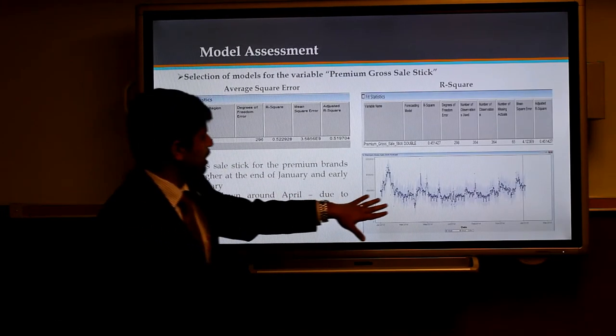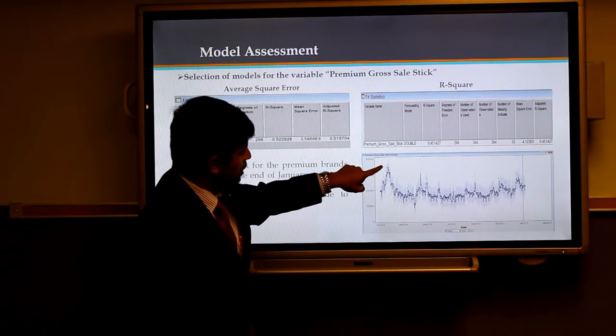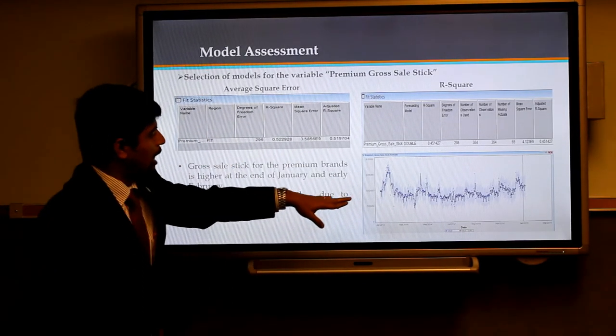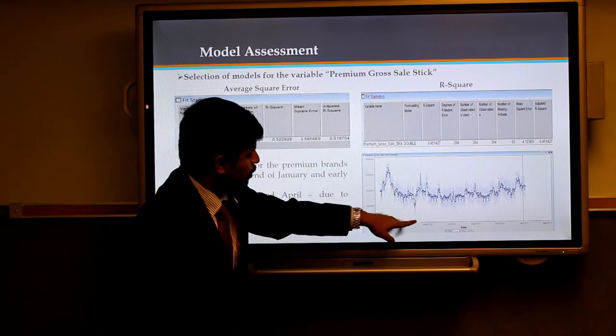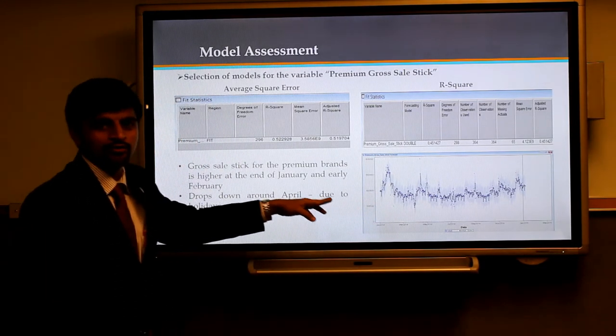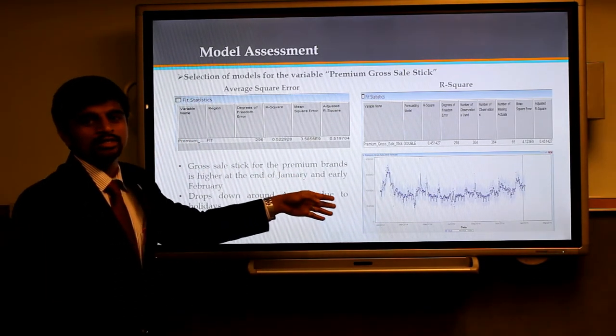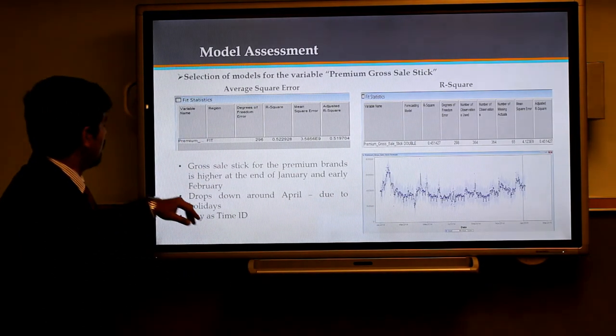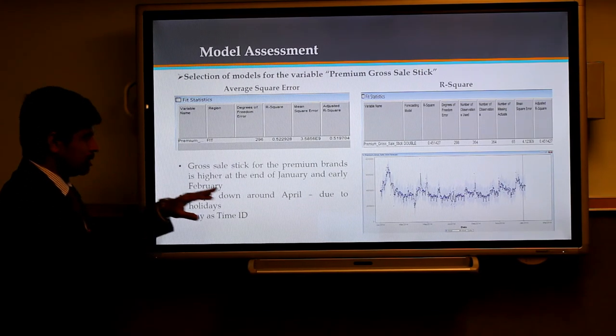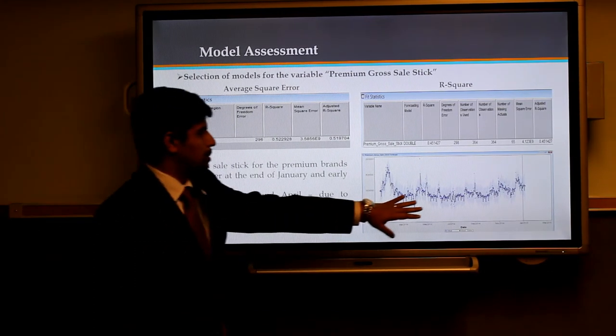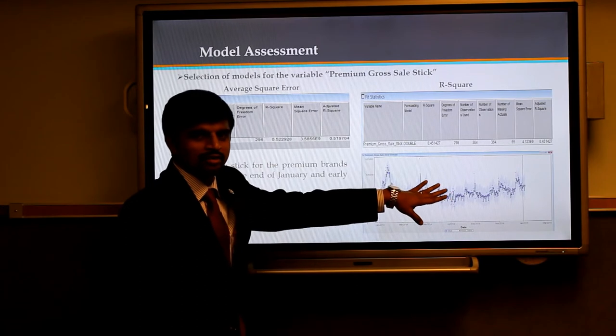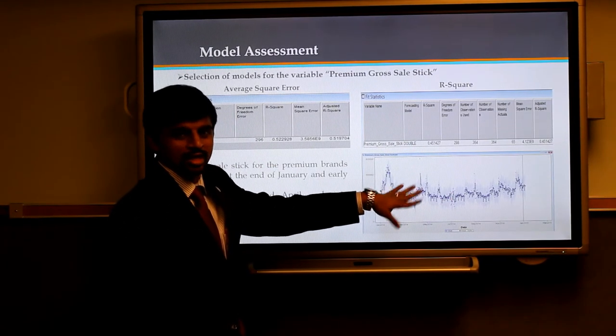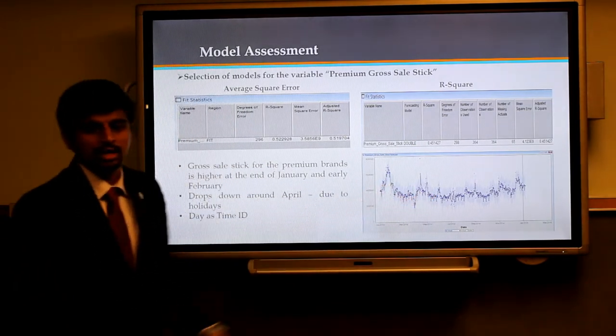As you can see from the graph here, there is a peak right close to the end of January or starting of February, and there is a downfall close to April. That is because of holidays and because of which the sales representative would not visit the outlet. We have lots of ups and downs in this graph, which is because the time ID is selected as day, and so we have a lot of observations here seen in the graph.